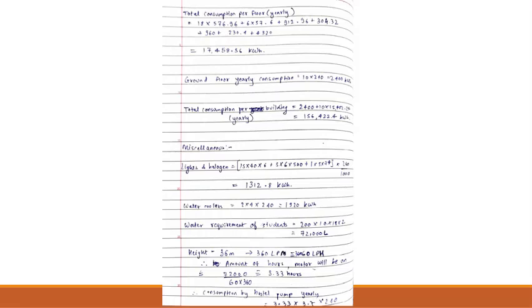Ground floor yearly consumption is given by 10 units, the daily requirement, multiplying by 240, the number of days a student stays in the hostel. Total consumption of the building is given by 10 multiplied by the total consumption per floor plus the ground floor yearly consumption. From the given data, we also calculate the miscellaneous power requirement of the hostel.